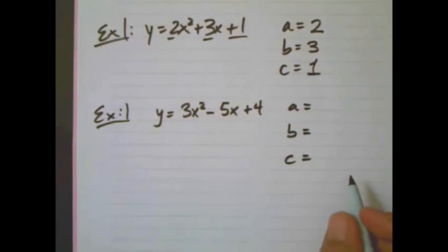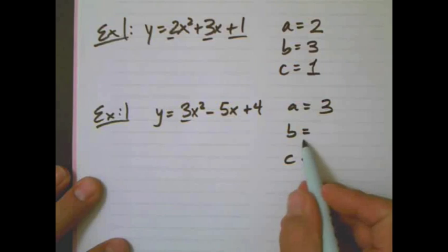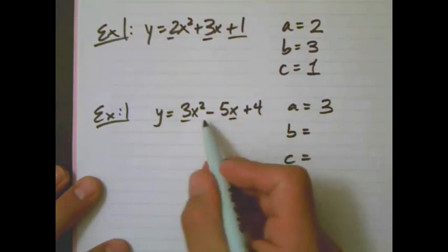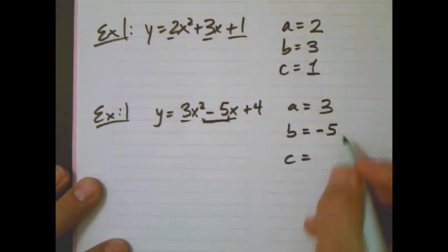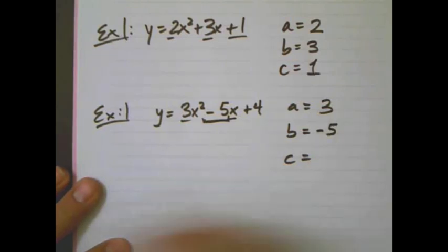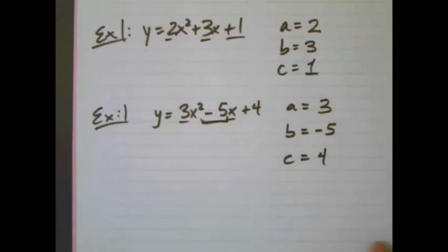We'll get a couple others. So, a is the number in front of x squared. b is the number in front of x. Well, here's x. b is this entire number, negative 5. And c is 4.